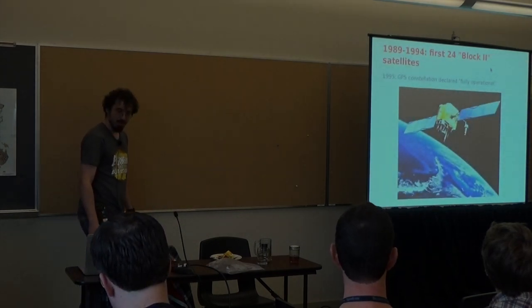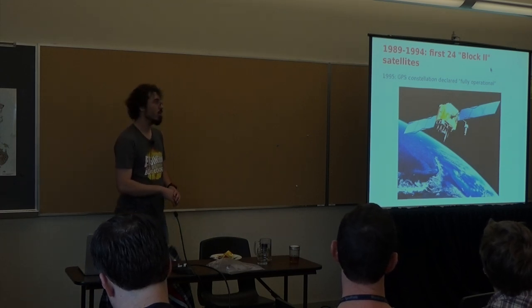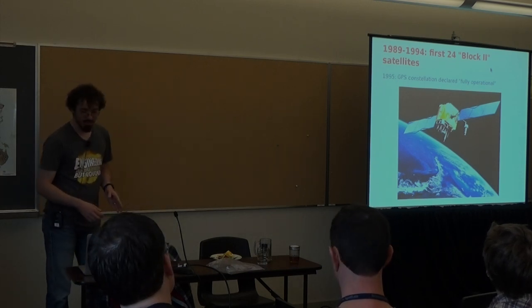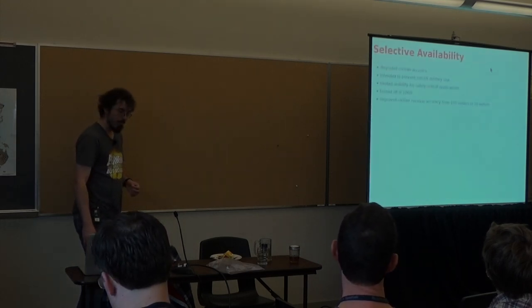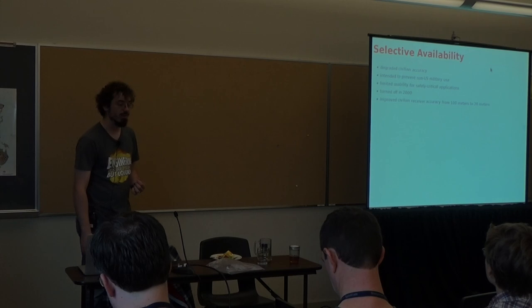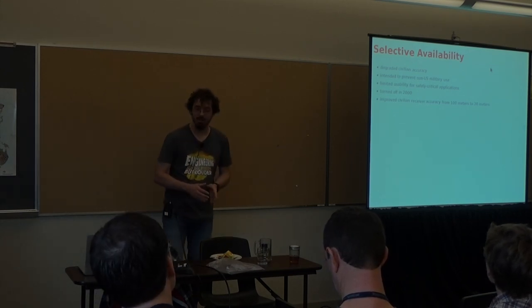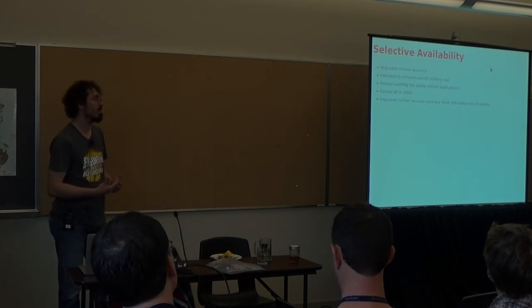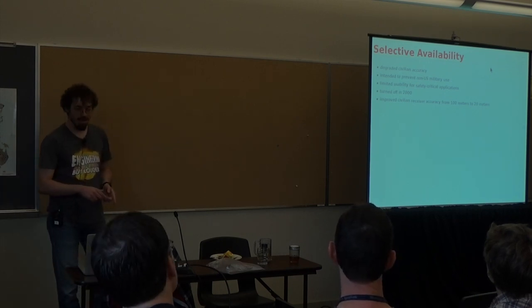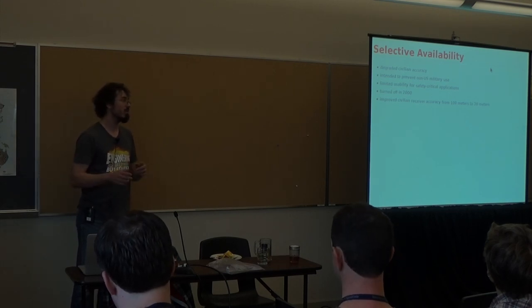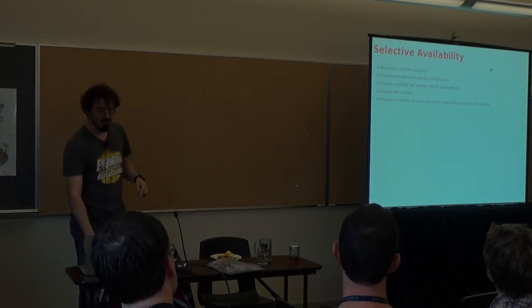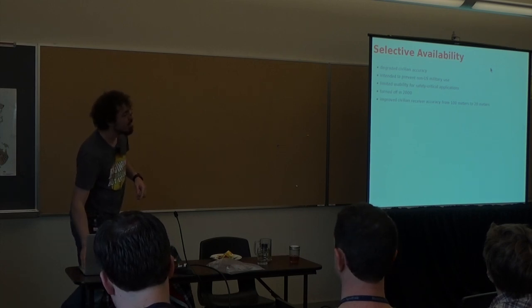And so, then over the course of 1989 to 1994, the first 24 Block II satellites, the first sort of real GPS satellites were launched. In 1995, the Constellation was declared fully operational. One thing that they did at first with GPS for civilian use was they had this thing called selective availability. It was designed to make civilian receivers less accurate. That was intended to prevent non-US militaries from using it for bad things. Unfortunately, it also limited usability for safety critical applications and, as a result of that and the fact that technology was finding ways to work around selective availability anyway, selective availability was turned off in 2000, which improved civilian receiver accuracy from 100 meters down to 20 meters. So, that's cool.